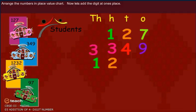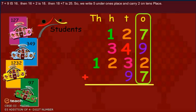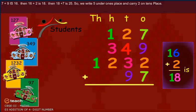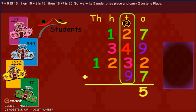Now let's add the digits at ones place. So, we write five under ones place and carry two on tens place.